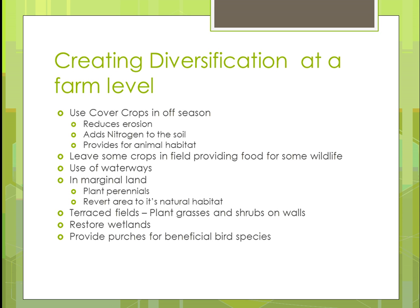If you have really marginal land — land where things don't grow very well — you could plant perennials, which attract wildlife and insects. Or you could restore an area to what it previously was, like a swamp or wetland. In areas that are very hilly, you could terrace the fields. In terracing, you often create a grass way to control where water runs, put in dams, build shrubs on walls, and other structures that help control wind — all helping you grow more things in hilly areas without losing soil.